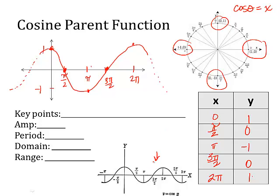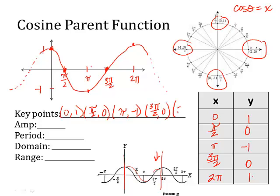Down here is a graph — it just shows you it keeps on going. What we're going to focus on is one period, one cycle. So our five key points: at zero, cosine is one. At pi over two, cosine is zero. At pi, cosine is negative one. At three pi over two, cosine is zero. And at two pi, cosine is one.